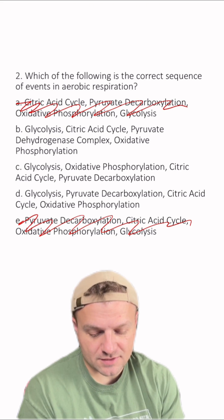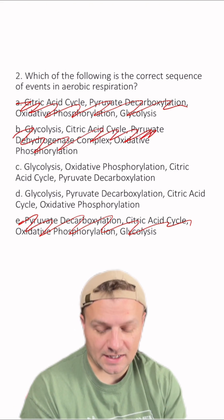Let's go through B, glycolysis, citric acid cycle, pyruvate. Nope, this one's not correct because citric acid cycle is not the second step.